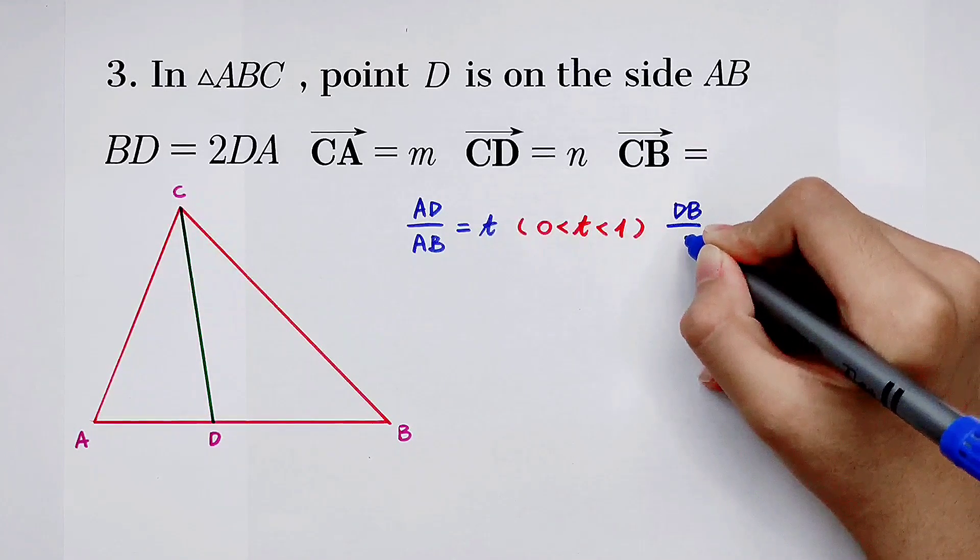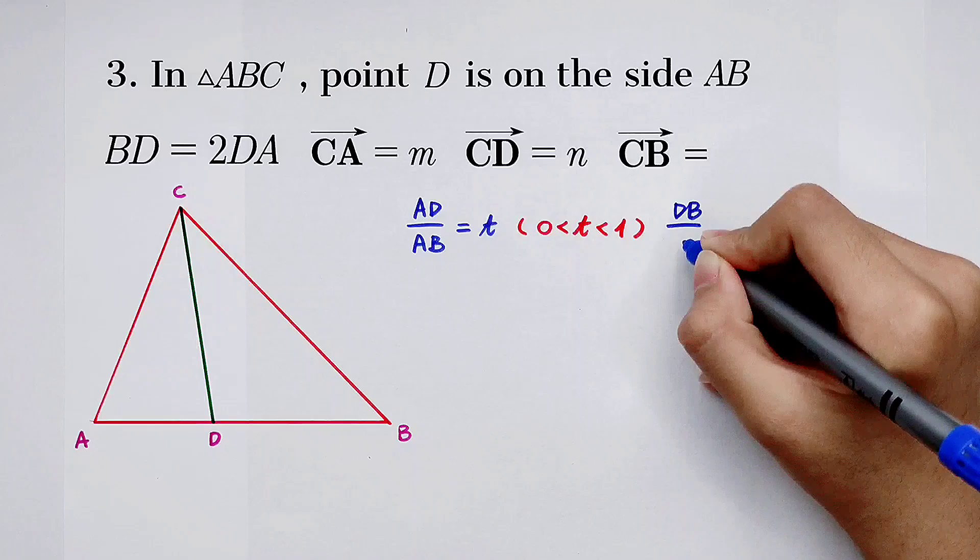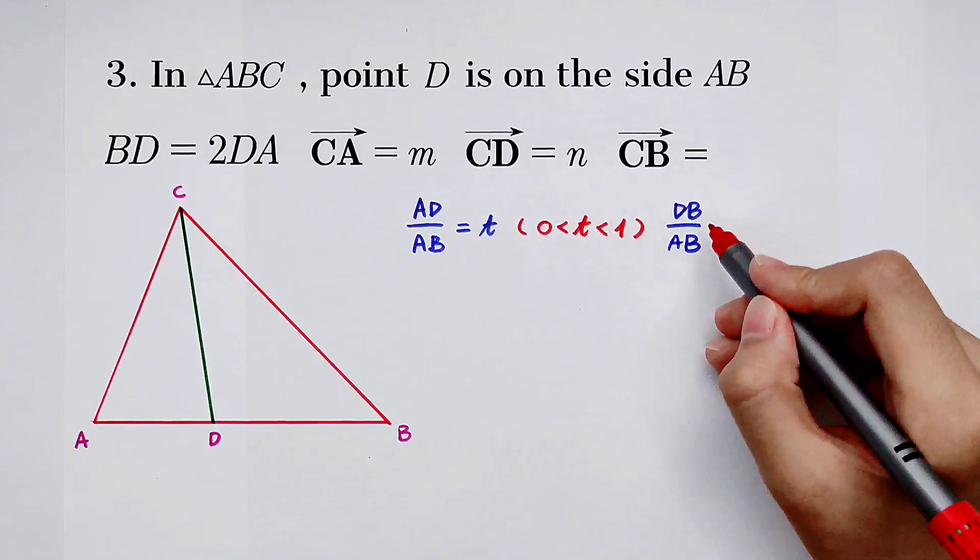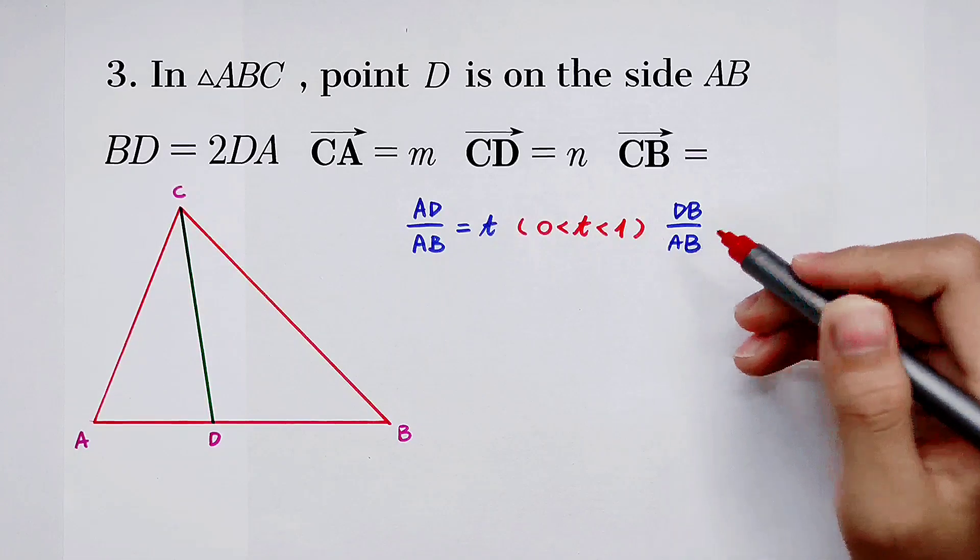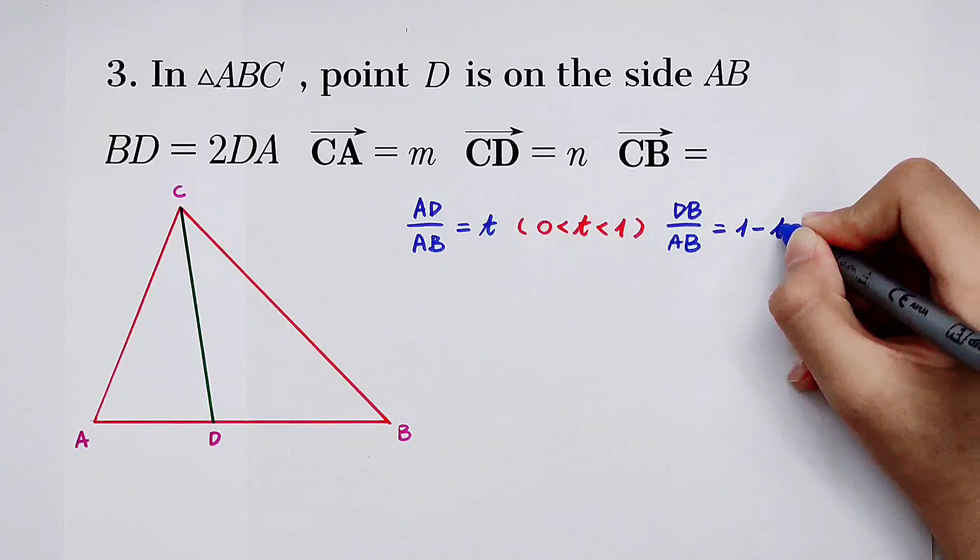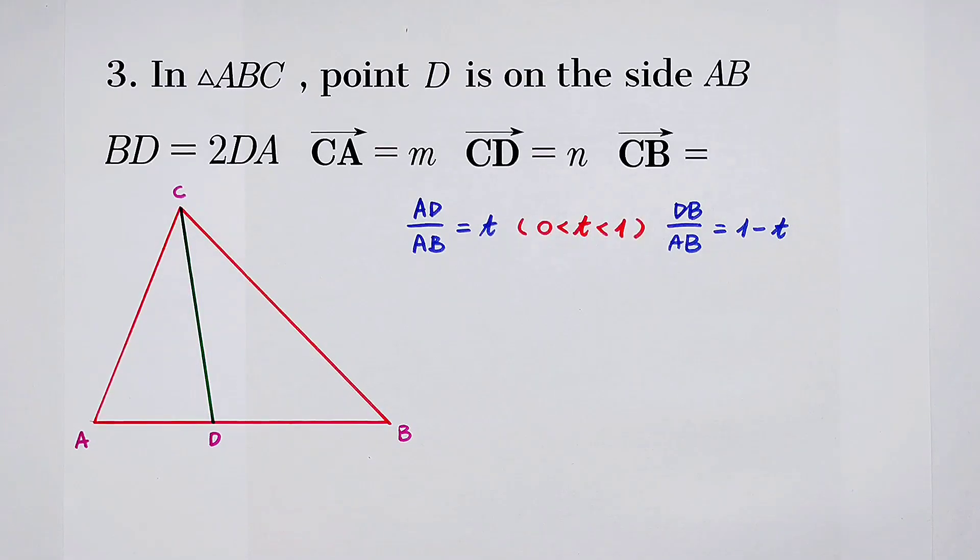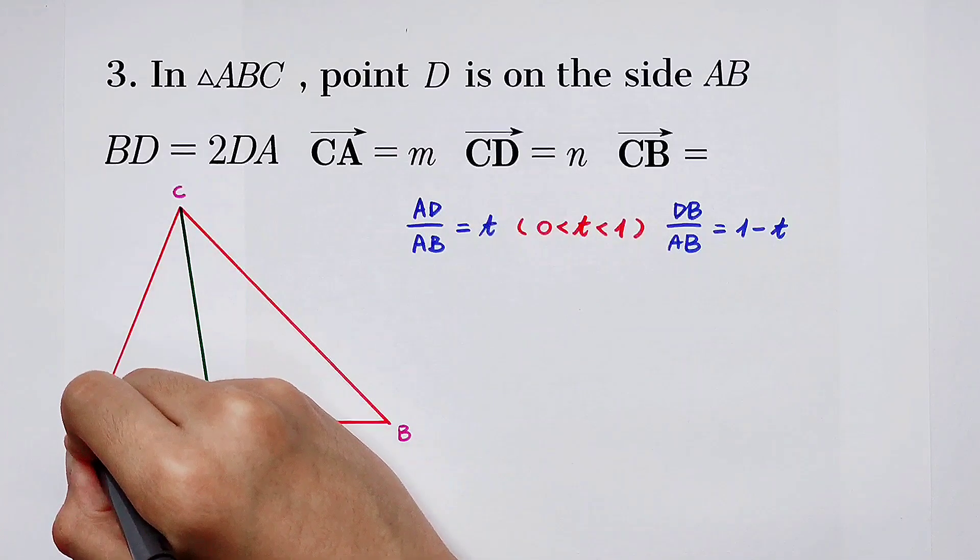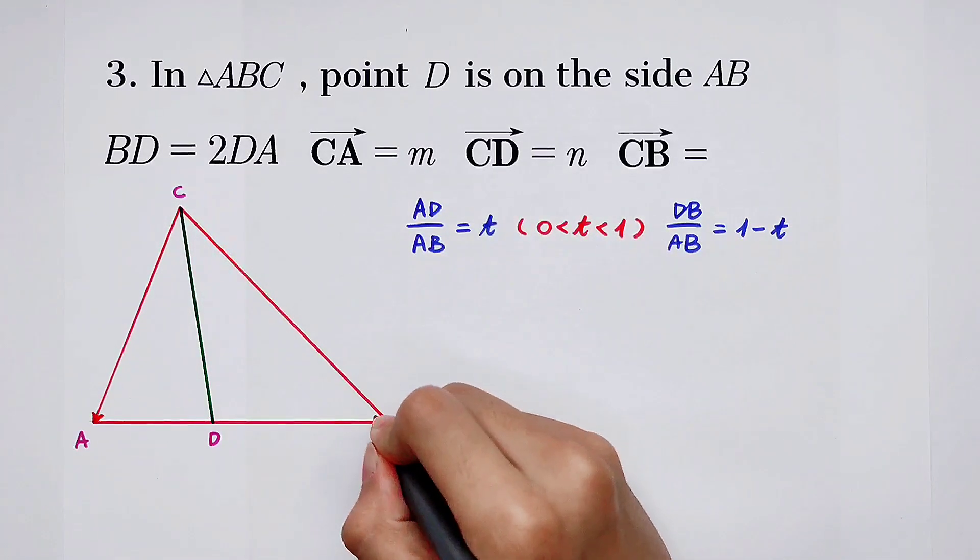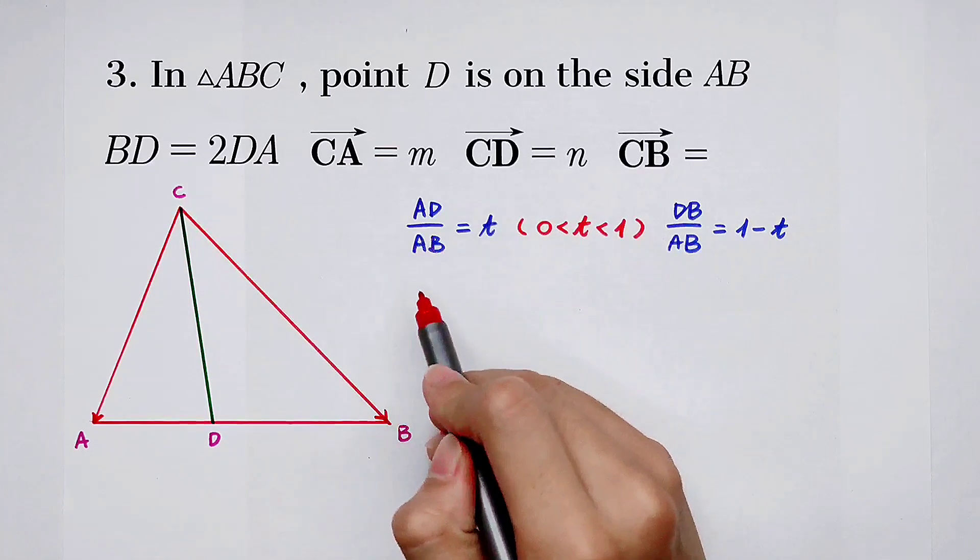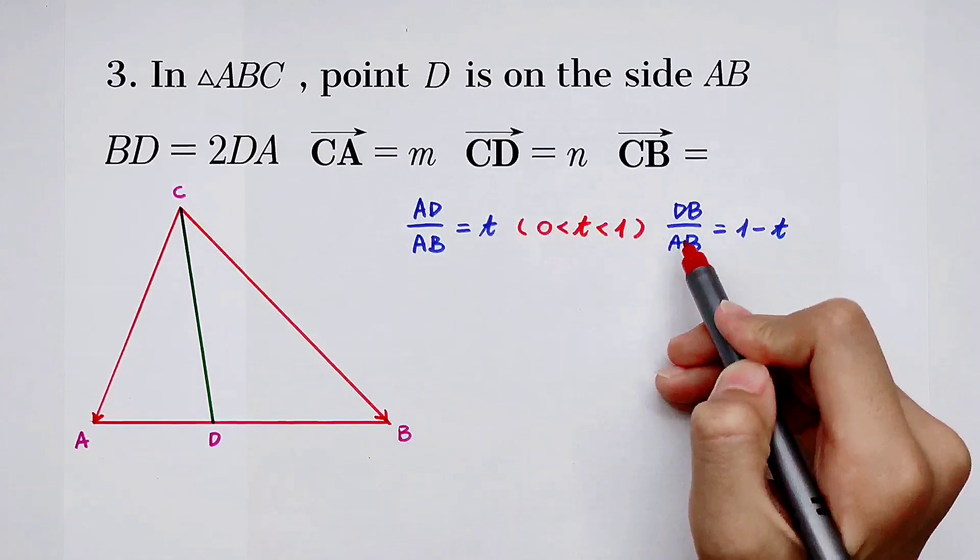So I want to ask you a question. What's the ratio of DB and AB? What's the value of DB divided by AB? Yes, it's 1 minus T. Now we'll calculate the vector CD, calculate it from the vector CA and the vector CB, and the ratio of AD and AB, the ratio of DB and AB.